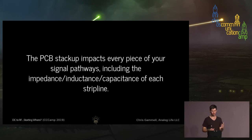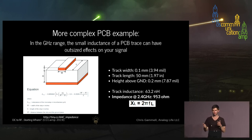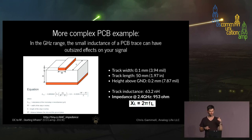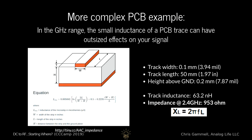As you start moving up in frequencies, complexities get introduced. This is pretty much the only math we have to do. Say you have a trace that's 4 mils wide or 0.1 mm. The track is about 50 mm long — about two inches. Your height above ground, from the top layer to layer two, is about 0.2 mm for a standard stack-up. That means that track has an inductance of 63 nanohenries. If we take that at 2.4 GHz, that's effectively a 1 kilohm resistor. The idea is that this is a more significant amount of impedance than you'd have normally thought from just having a wire. Your ground plane should always be right below where you're running your RF signals — that's very important. And you need to pay attention to this when buying a PCB and know the stack-up dimensions.